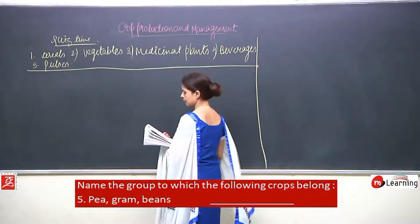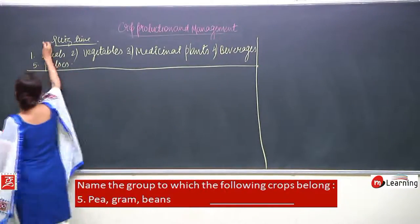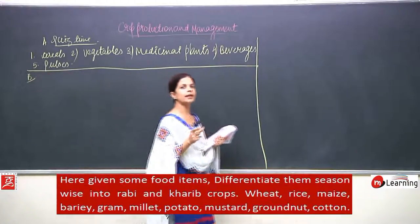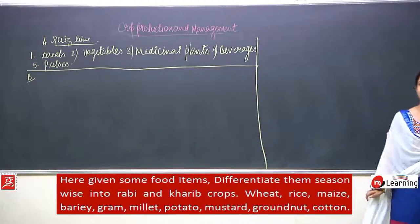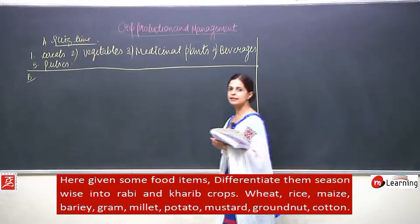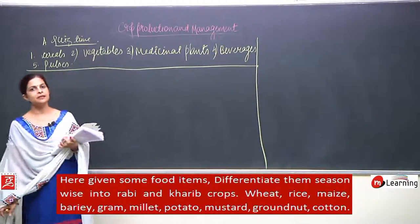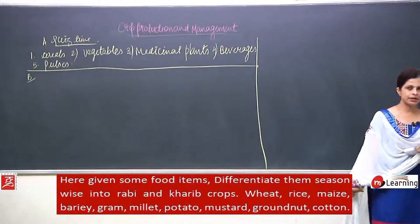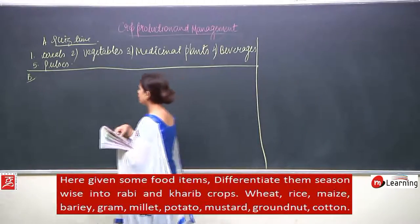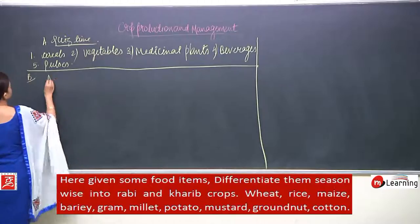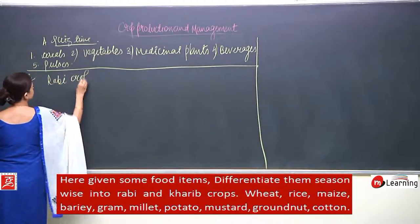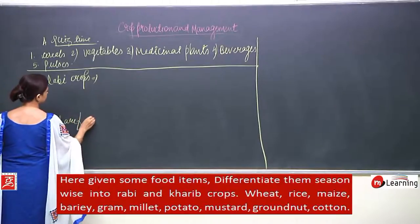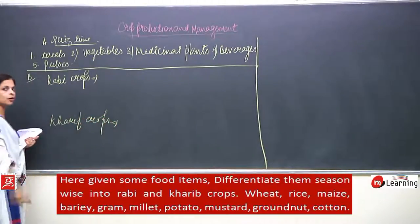Now come to part B. They have given certain Rabi and Kharif crops mixed together. We have to sort out whether these are Kharif or Rabi crops. I will write Rabi crops and Kharif crops so you can understand which crop belongs to which category.